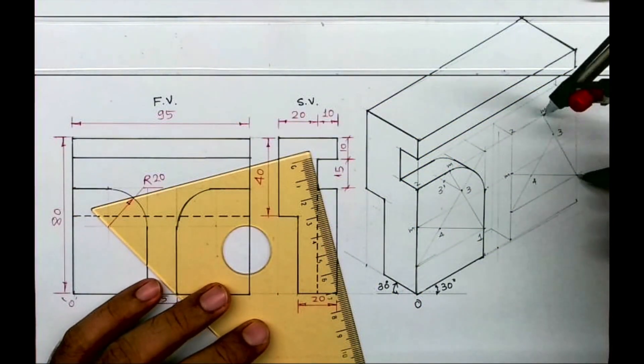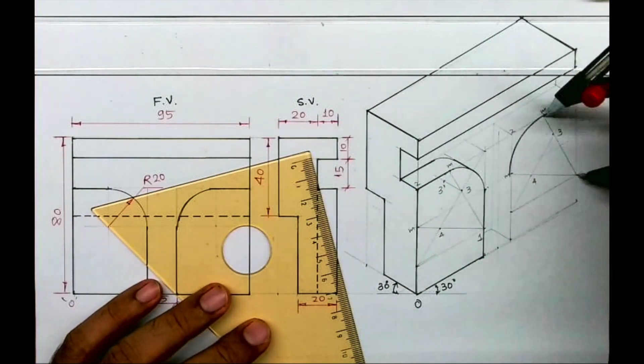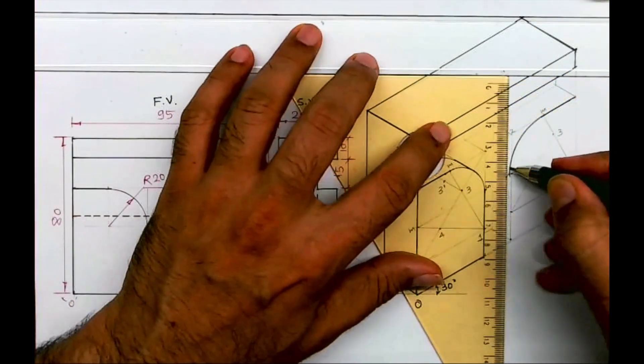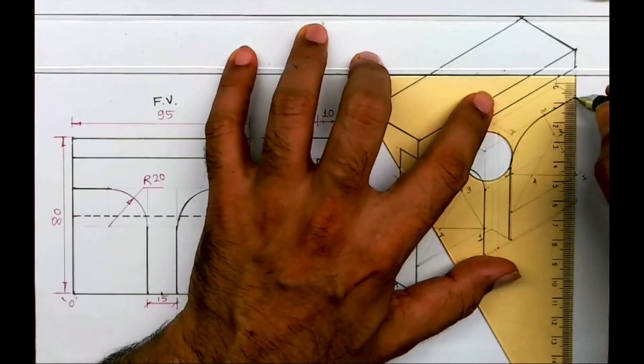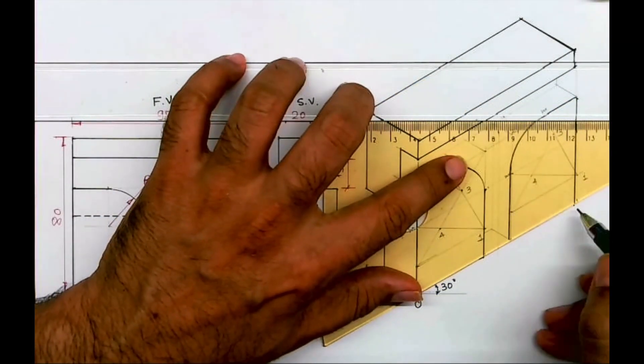Now from point one we'll draw arc, and this portion will be dark.